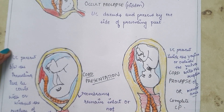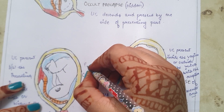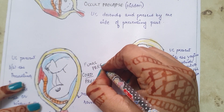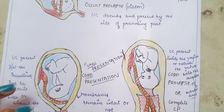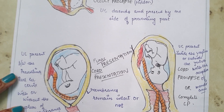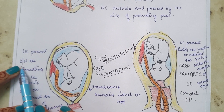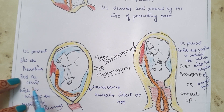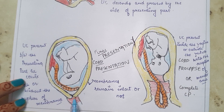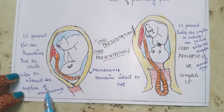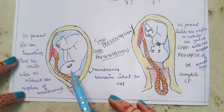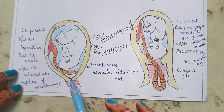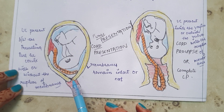Next is cord presentation, also known as funic presentation. In cord presentation, the umbilical cord is present between the presenting part and the cervix, with or without the rupture of membranes. In this type, the membranes may be ruptured or may not be ruptured — usually not ruptured.